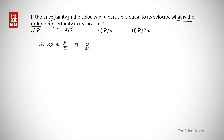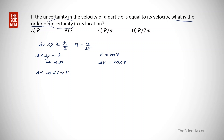Since we need to find only the order of uncertainty, we can approximate the relation as delta x times delta p approximately equal to h. We know that momentum p equals mass times velocity, so delta p equals m times delta v. We can rewrite the expression as delta x times m times delta v approximately equal to h.